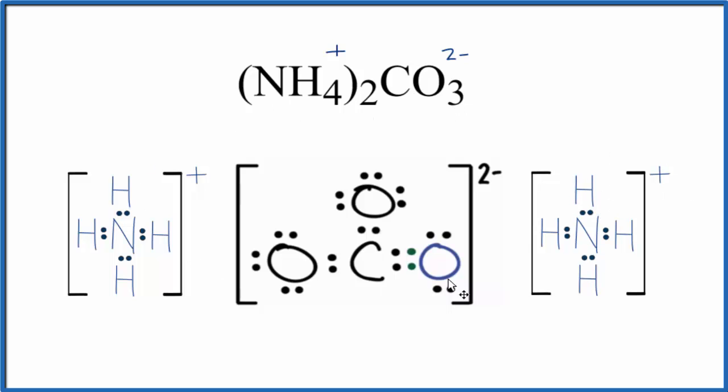Note that this is what's called a formula unit for this ammonium carbonate. When you have solid ammonium carbonate, it's actually a crystal and it's made up of repeating patterns of these formula units.